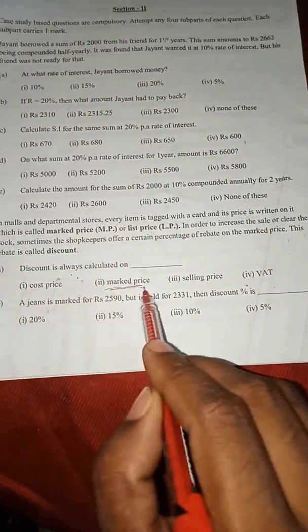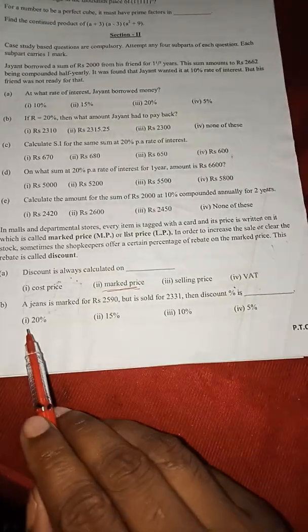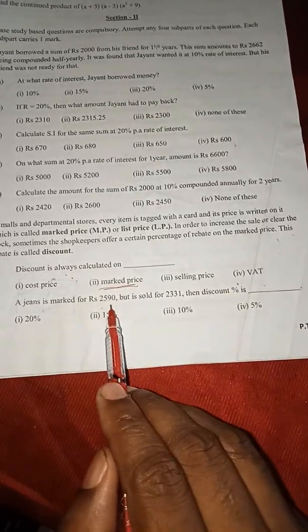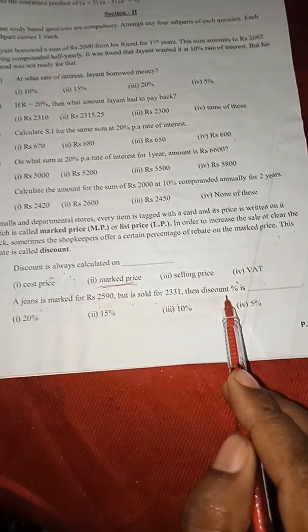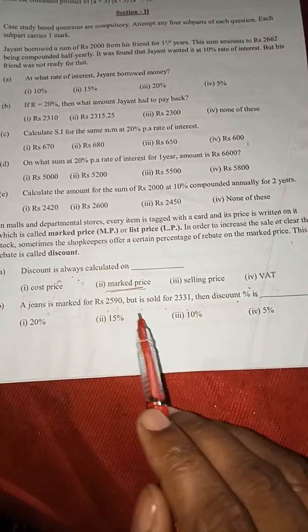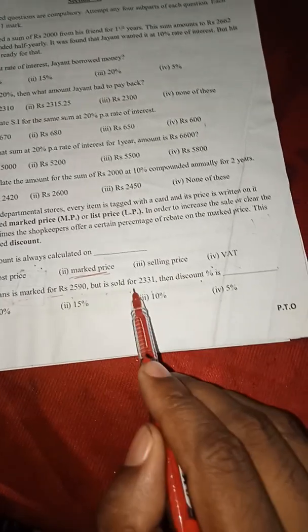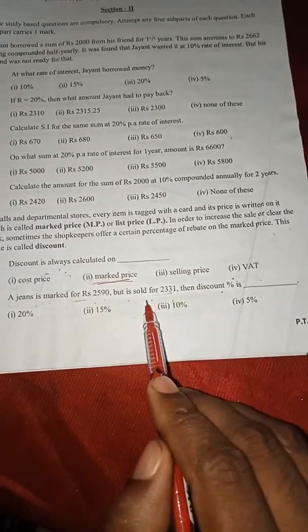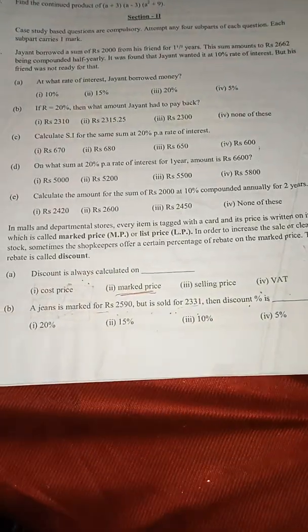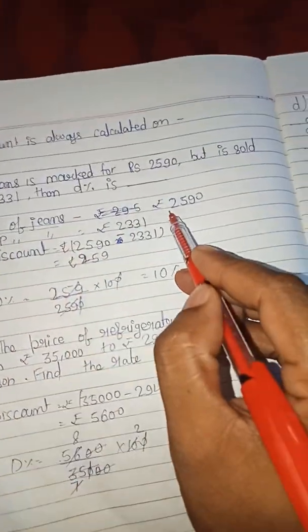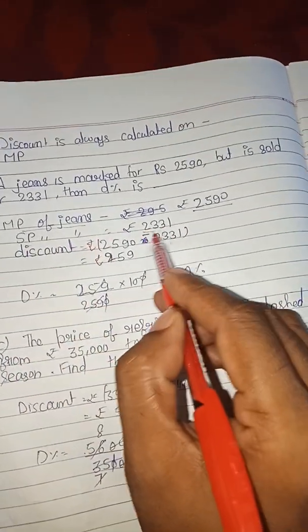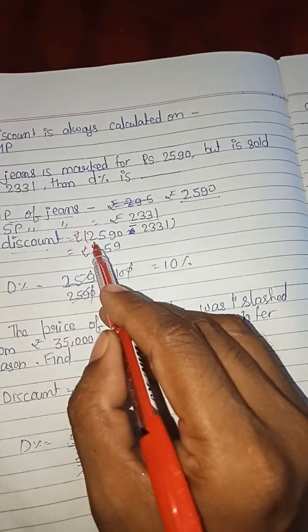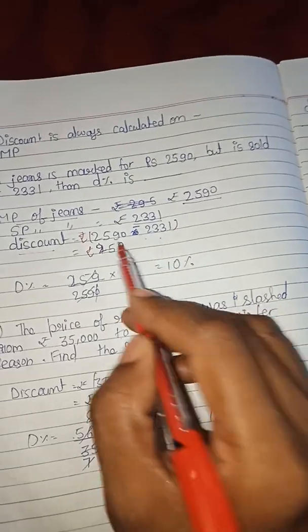Second question: A jeans is marked 2590 rupees but is sold for 2331, then discount is? You know that how we find out the discount - it is the marked price minus selling price. So first we should find what discount is given, and after that we will find the discount percent. So here you can see that MP of jeans is 2590 rupees and selling price of jeans is 2331 rupees.